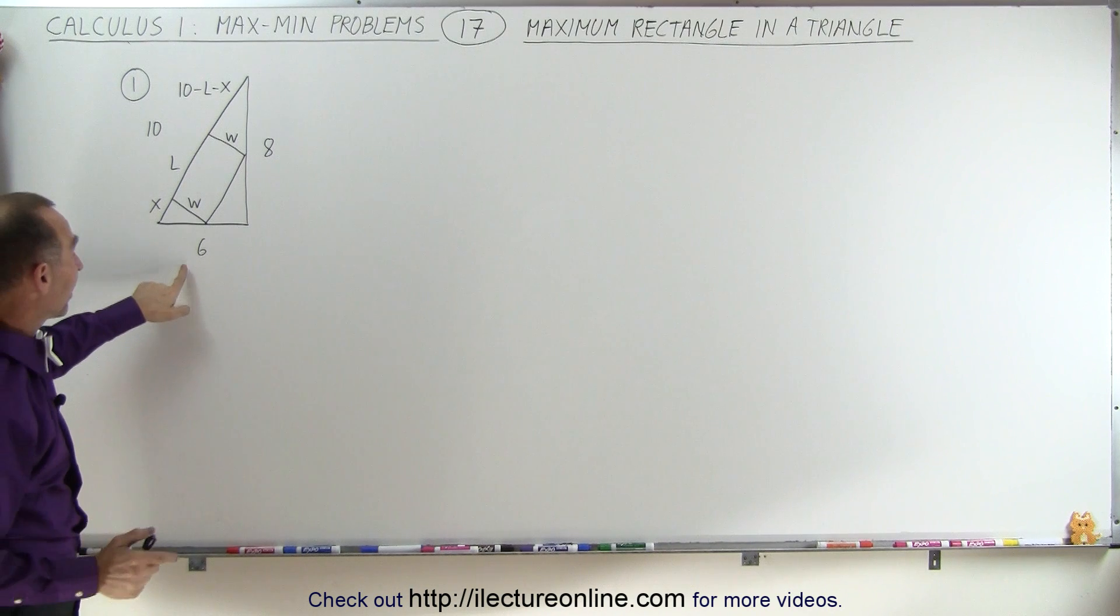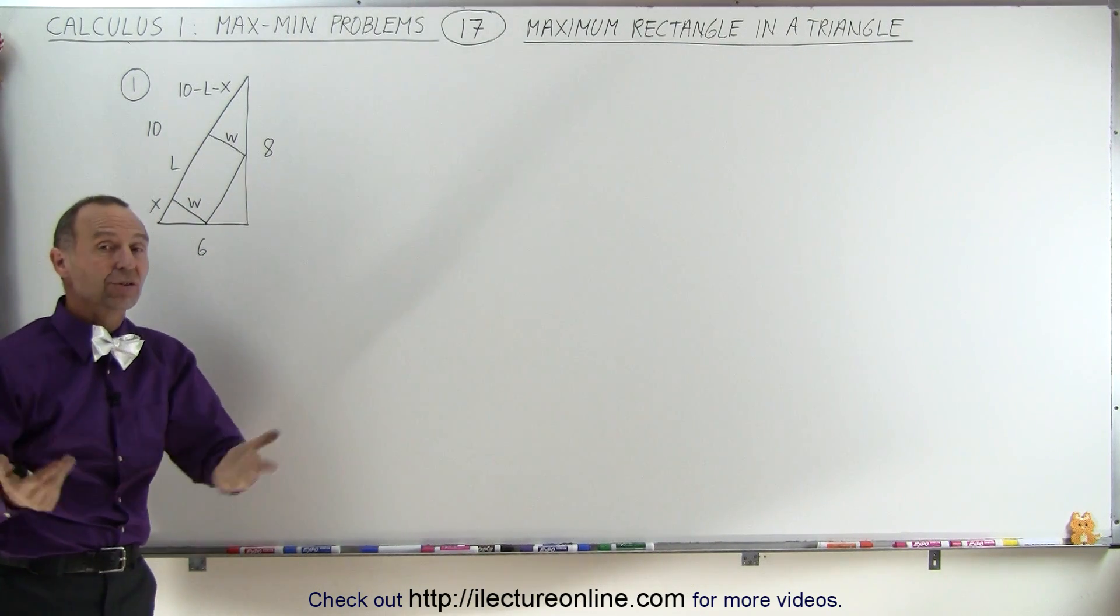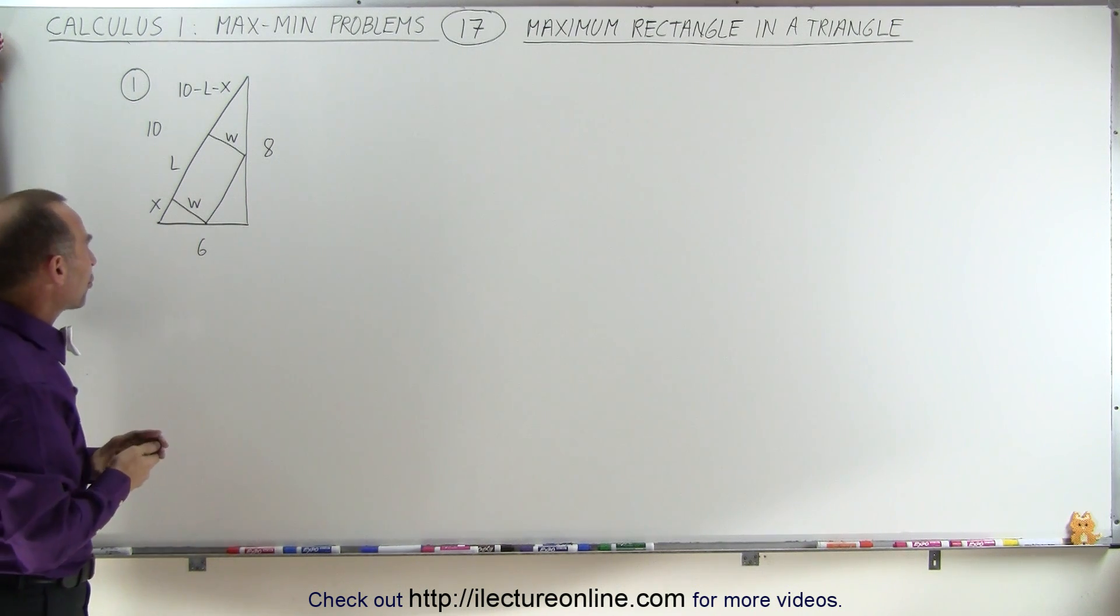Notice that the length of the three sides are 6, 8, and 10, could be inches, feet, meters, whatever you like it to be. But you notice that it's a 3, 4, 5 ratio triangle.